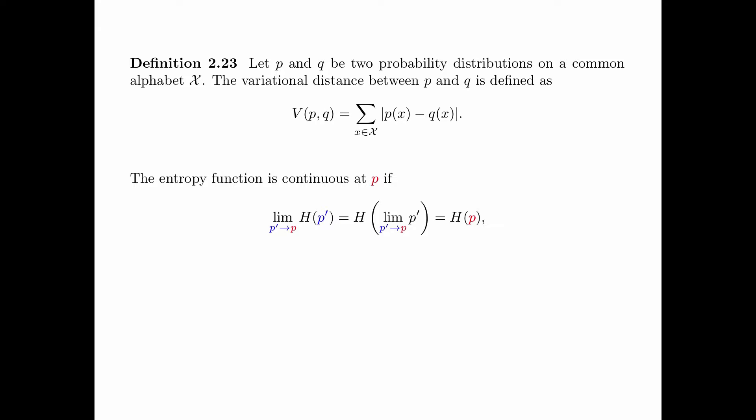The entropy function is continuous at a target distribution p if the entropy of p prime, as p prime tends to p in variational distance, is equal to the entropy of the limit of p prime as p prime tends to p, that is, the entropy of p. In other words, the order of taking the entropy function and the limit can be exchanged.